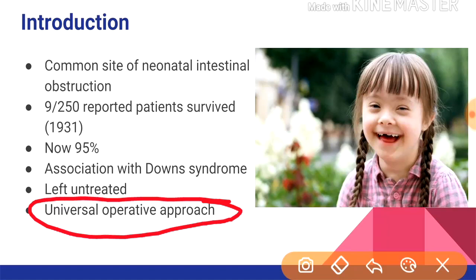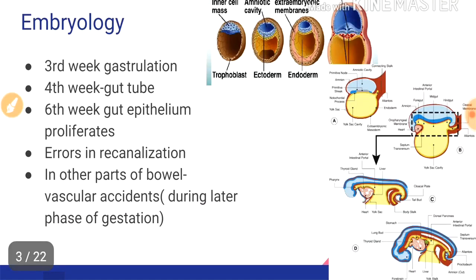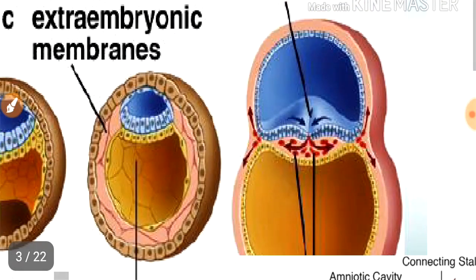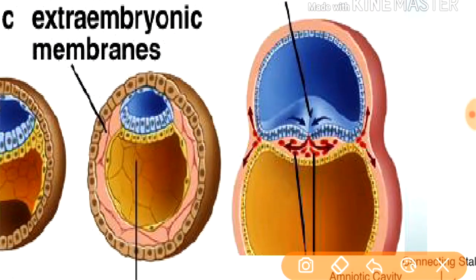Coming to the embryology of duodenal atresia. In the third week, gastrulation occurs. In gastrulation, the three layers of the embryo are formed. The area facing the amnion forms the ectoderm, and the area facing the yolk sac forms the endoderm, and in between it becomes the mesoderm.